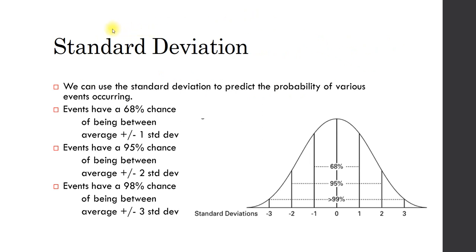First, we need to understand the role of mean and standard deviation. When we take a look at stock returns, our mean return can be in the center here. From here, our standard deviation is the amount of probability that our data will fall into.